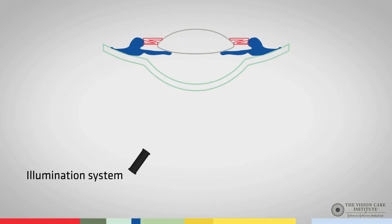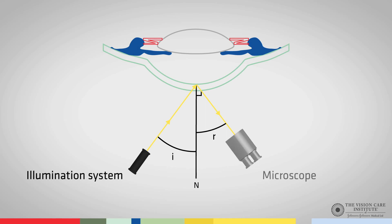In order to achieve specular reflection, we need to observe the reflection of the illumination system's light source. In this figure, we can see the illumination system being directed at the apex of the cornea, making an angle I with the normal N to the corneal apex. In compliance with the law of reflection, the reflected ray will make an angle R to the normal N, and the angles I and R will be equal.